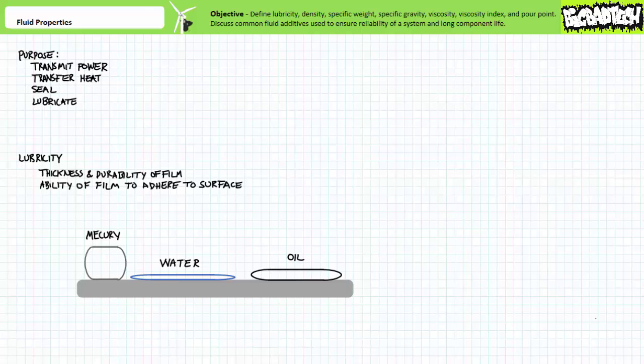A range of liquids can be employed for hydraulic systems. However, oil is the liquid of choice because of oil's excellent lubricity, where lubricity is the ability of a liquid to form a durable film between contacting surfaces. Consider the range of lubricity demonstrated by three different liquids: mercury, water, and oil.